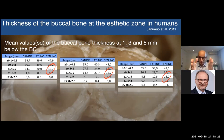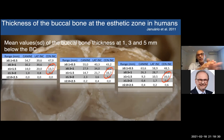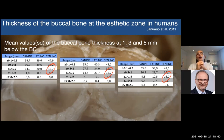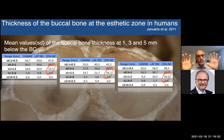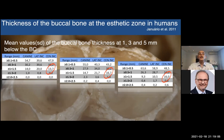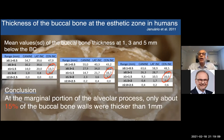At the table in the middle — three millimeters below the bone crest — you see a similar situation. At five millimeters below the buccal crest, only about 15% of buccal walls will have a thickness larger than one millimeter, meaning most of the buccal wall is not made of bundle bone — it's made of alveolar bone that's much more stable. So one millimeter is a magic number. In conclusion, at the marginal portion of the alveolar process, only about 50% of buccal walls will be thicker than one millimeter.